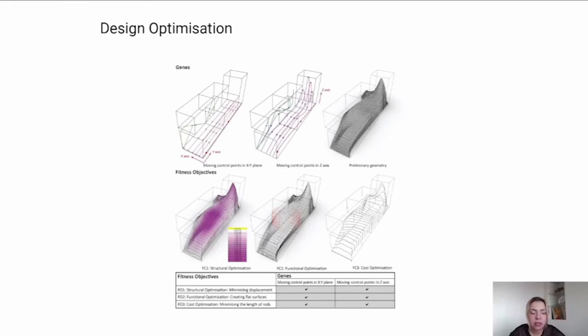And we parameterize the design. So what is called genes are used for manipulating the morphology of the geometry. And in our case, we had three fitness objectives. The first one being to minimize the structural displacement of the global geometry through finite element analysis. The second one was more functional - the objective was to evolve the phenotype towards developing flat surfaces to serve as seating areas. And the third fitness objective was to evolve the phenotypes to use as few metal rods as possible for the in-situ reinforcement system. So this was more a cost optimization type of fitness objective.